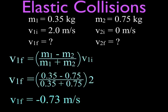That means it bounces off of number two and moves back to the left. So it's coming in to the right and moving off to the left in the negative direction. This -0.73 m/s means that the ball moves with this speed in the negative direction. We get a negative number because this is 0.35 minus 0.75, and that's going to give a negative answer for mass number one.